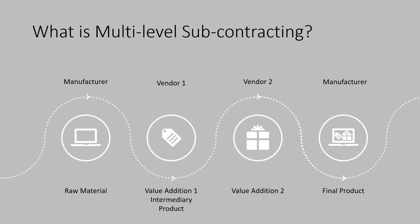Let us expand the same example to understand this more clearly. The raw material, which is a laptop, is sent from the manufacturer to the first subcontracting vendor who will be adding labels. A valuation is done here and an intermediary product is created. Now instead of transferring this material directly to the manufacturer, it is transferred from subcontracting vendor 1 to subcontracting vendor 2 who is supposed to do some packaging on this material. This intermediary product is packaged by vendor 2 and turns into a final product which is sent back to the manufacturer.